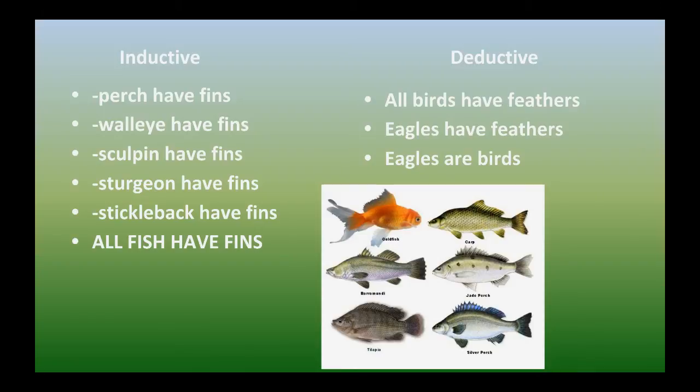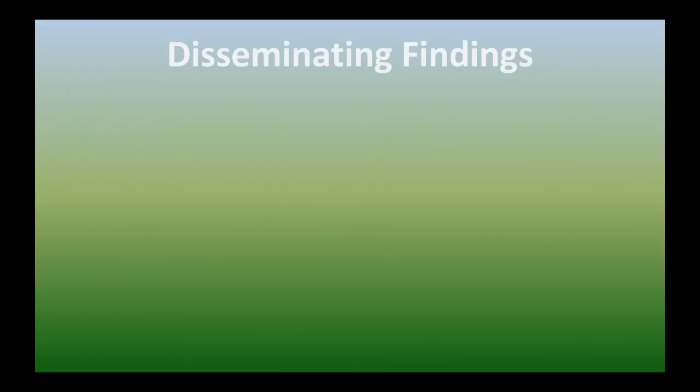Opposite of that, again, is deductive. We're starting, remember, with a theory, and this is my theory, all birds have feathers. I've seen eagle, eagle has the feathers, which makes the eagles are birds. So just know the difference between those two types of reasonings.